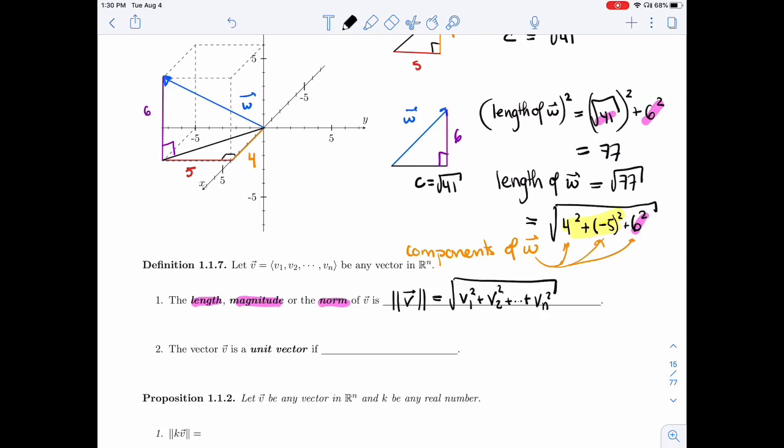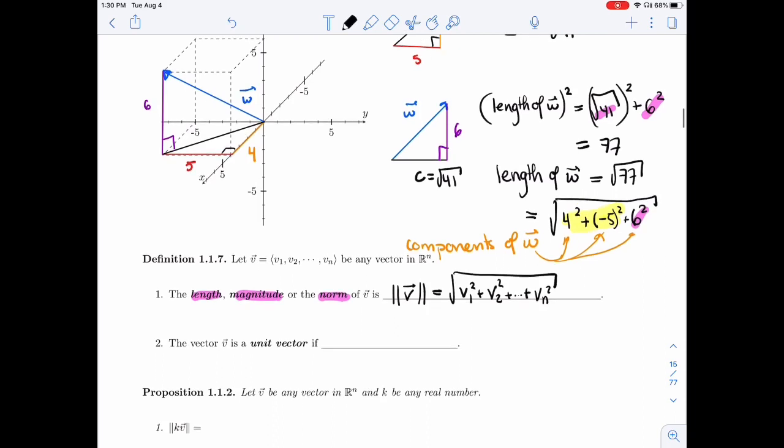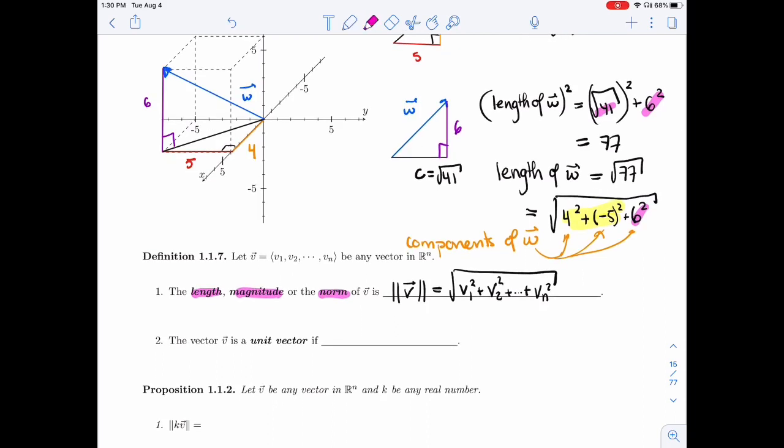So all that work of doing in the 2D picture and the 3D picture was to get this formula for the norm of a vector. We'll call the vector V a unit vector if its length is 1. So all the vectors of length 1 are called unit vector.